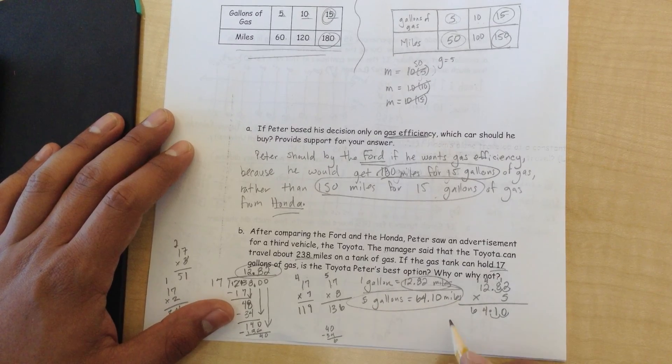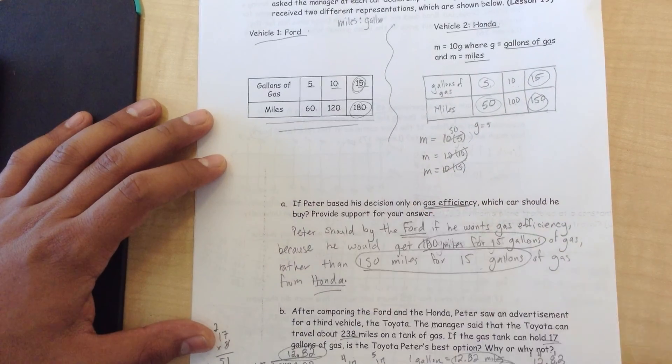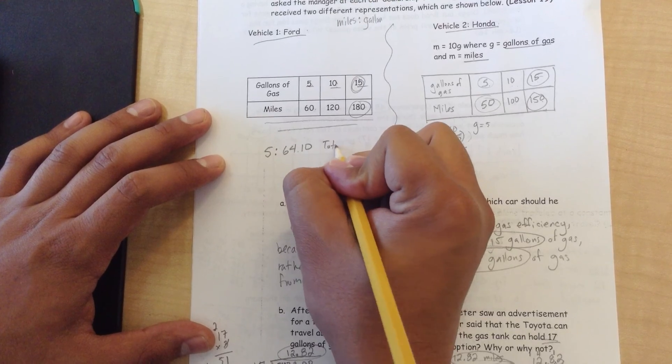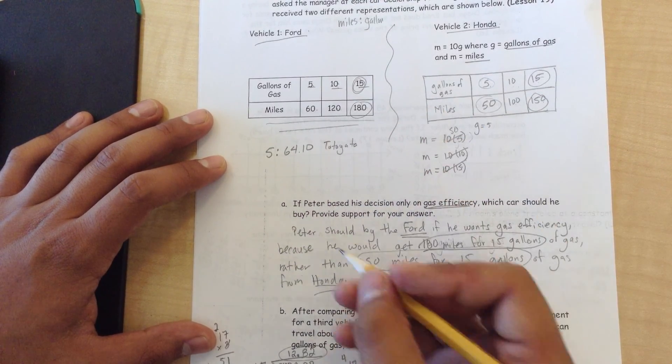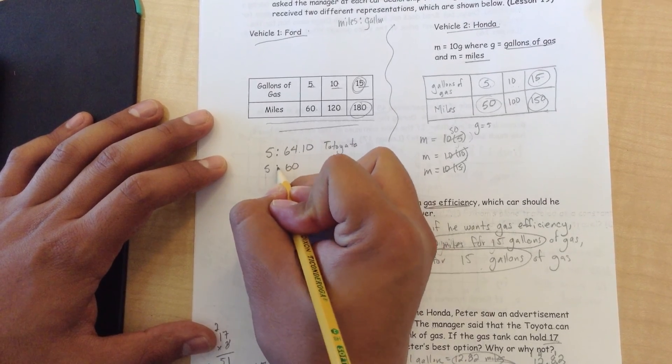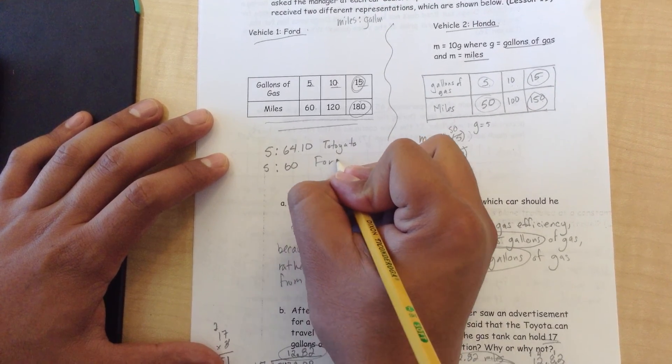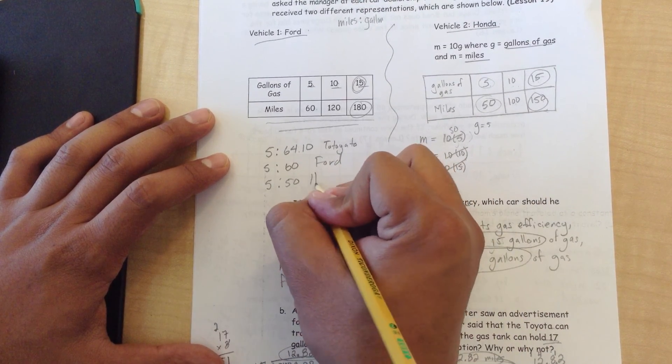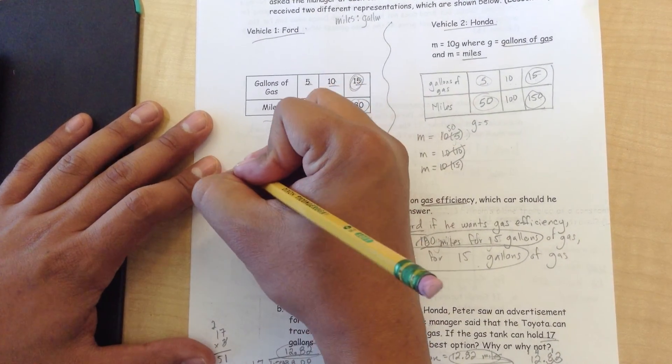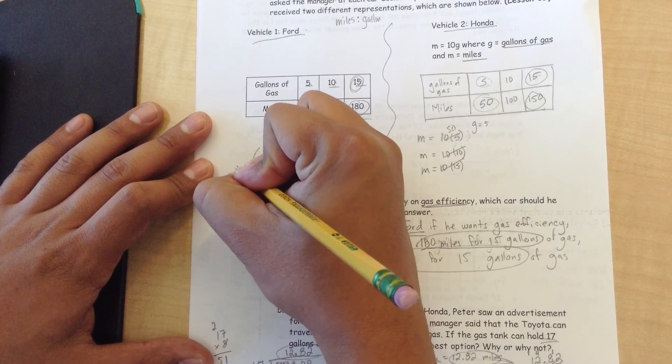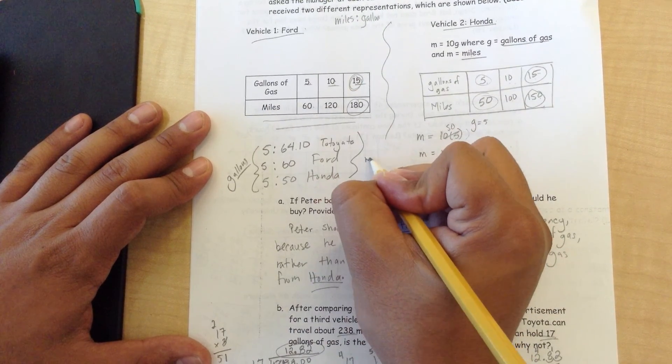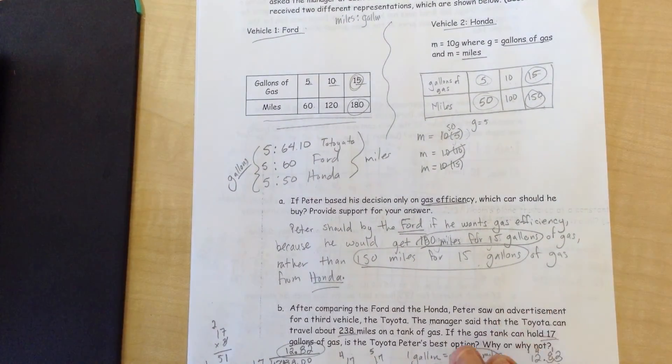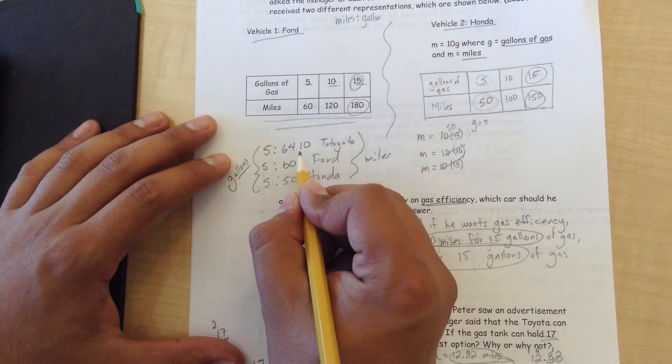We can compare this ratio. 5 to 74.10 is the Toyota. 5 to 60 is the Ford. And 5 to 50 is the Honda. These are all basically the gallons of gas, and this is all the miles. So what you're looking for is you know all the gallons are 5. Which one gives you the most miles? Which is going to allow you to travel the furthest? Looks like it's going to be the Toyota.